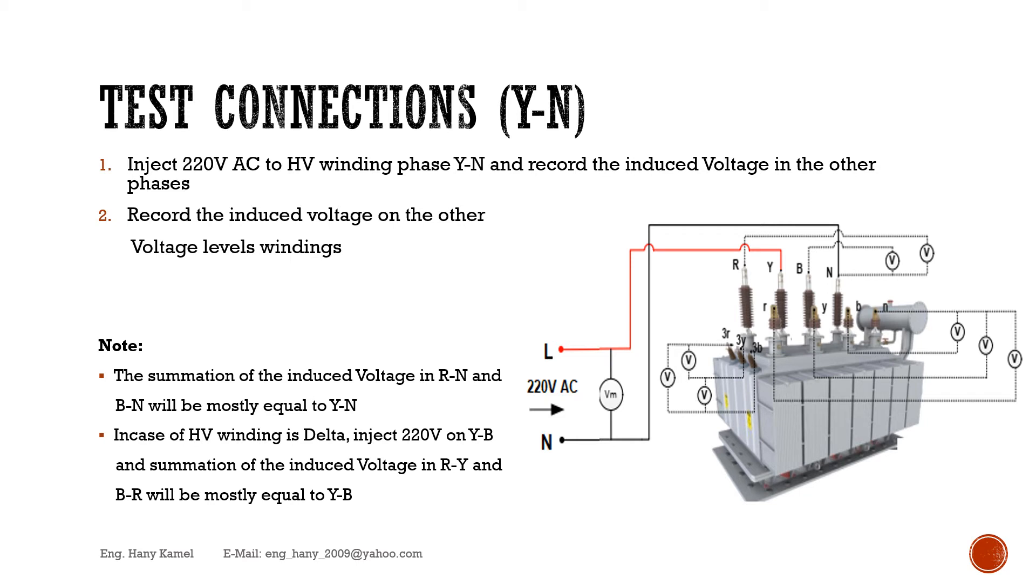Inject 220 volts on Y-B and summation of the induced voltage in R-Y and B-R will be mostly equal to Y-B.